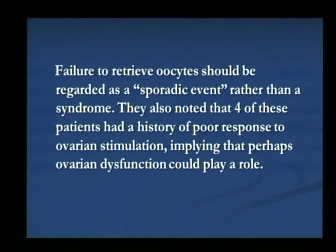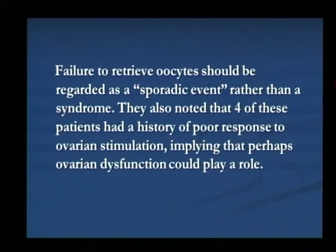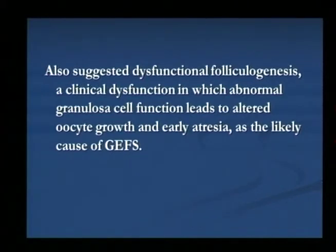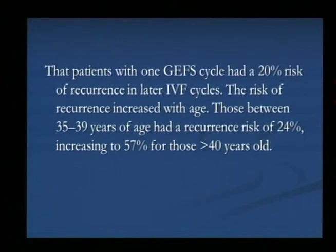In their study, they noted that four of these patients had a history of poor response to ovarian stimulation, implying that dysfunction plays a role. The problem is a clinical dysfunction related to granulosa cell function, where you have altered oocyte growth and early atresia. Once a patient has this, you can counsel that they have a 20% risk of recurrence in related IVF cycles. The risk of recurrence increases with the age of the patient.